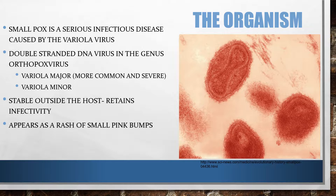The rash usually starts around the mouth and the eyes, then spreads to the arms and then the trunk of the body.